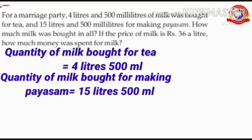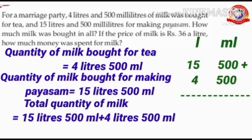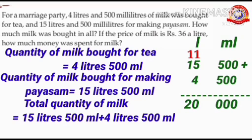How much milk was bought in all? That means we have to find out the total quantity of milk. Total quantity of milk equals 15 liters 500 ml plus 4 liters 500 ml. To calculate this, arrange liter and ml as shown here. Then write 15 below the liter and 500 below the ml. Then write 4 below the liter and 500 below the ml. Then add together. So, total quantity of milk equals 20 liters.